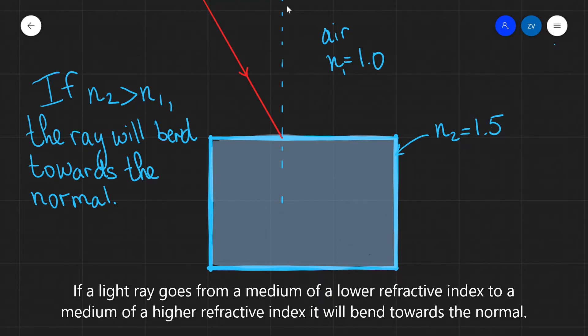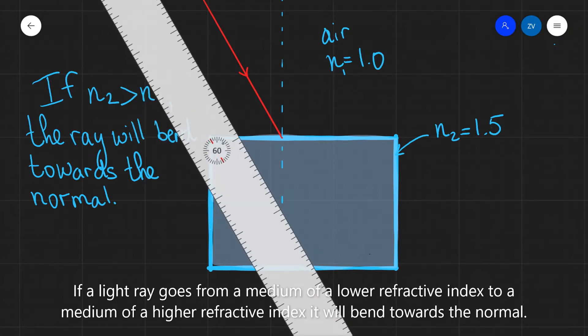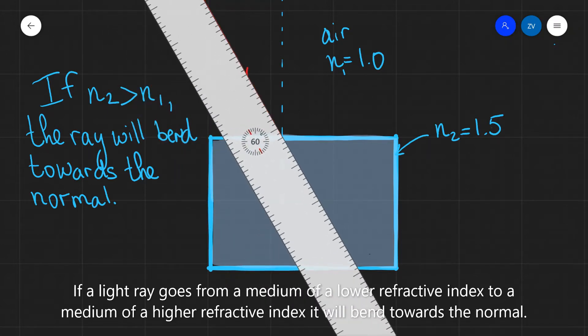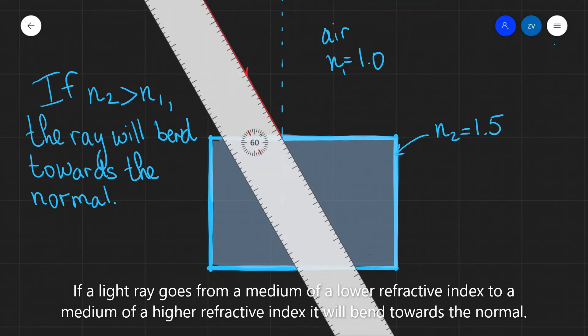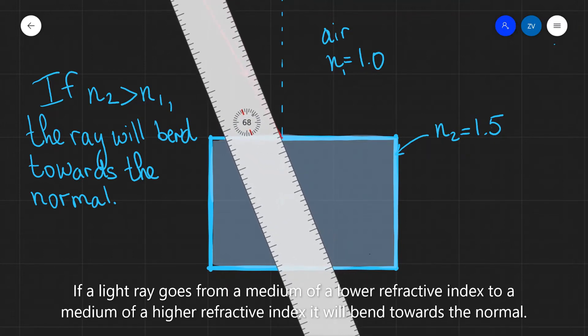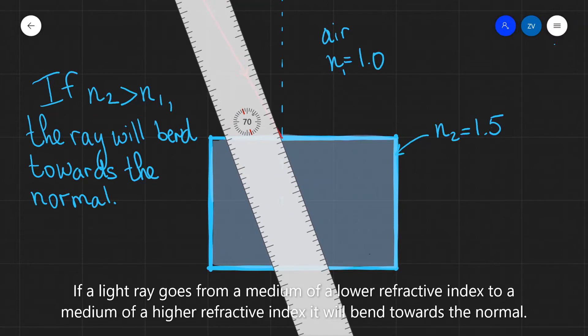The normal is just a line which is perpendicular to the surface. For instance, this ray over here, if there was no glass block in front of it, will just carry on a longer straight line. But that's not the case. There is a material of a higher refractive index, so it will tend to bend towards the normal at a certain angle, like so.